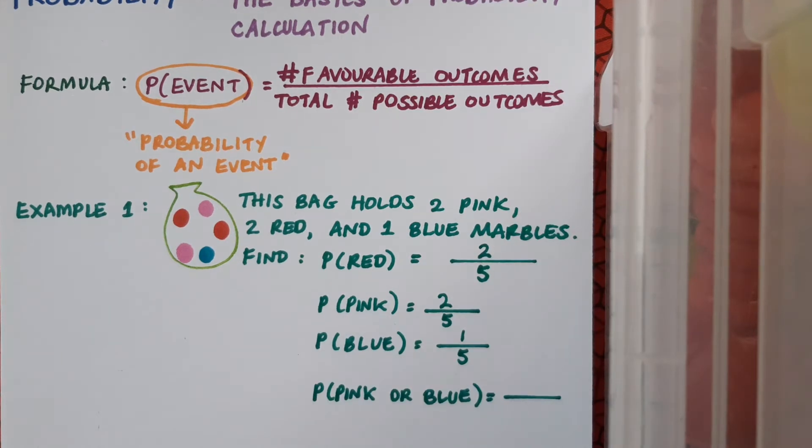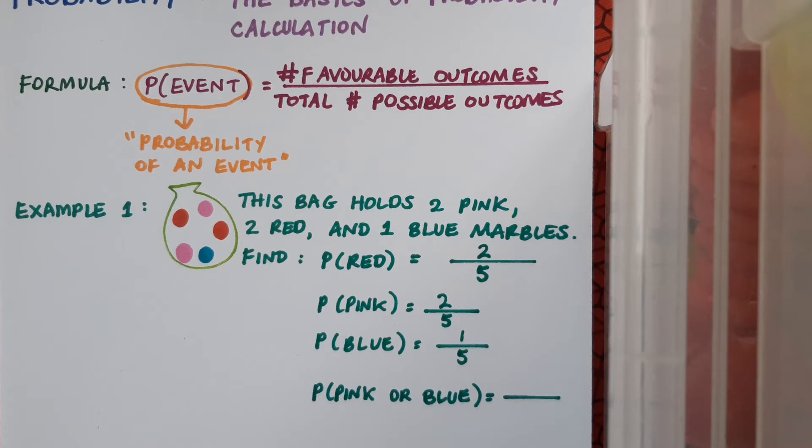Let's find the probability of selecting a pink marble or a blue marble. In that case, the favorable outcomes are pink or blue. So let's count them: one, two, three of those, and again there's five possible outcomes.